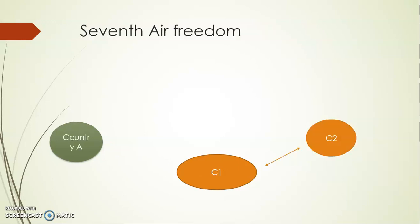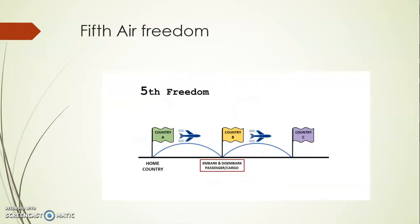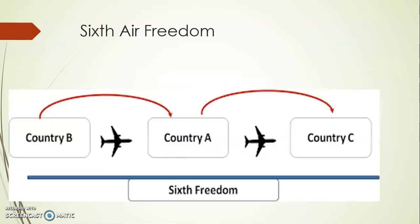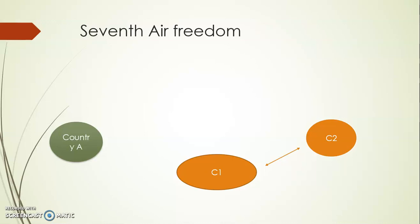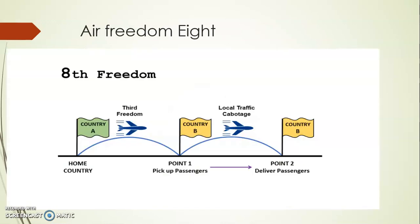The Seventh Air Freedom allows a country A carrier to take passengers between two different foreign countries without connecting back to the home country at all. It is an extension of the Fifth Air Freedom — in the Fifth we connect country B and C through the home country, but in the Seventh, the carrier operates seamlessly between country B and country C without going back to country A.